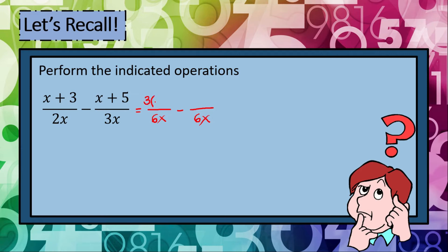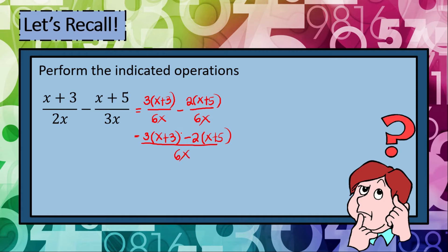So 3 multiplied to x plus 3. Then 6x divided by 3x is 2, so we have 2 multiplied by x plus 5. Since the denominator is the same, we can rewrite the numerator into 3 multiplied by x plus 3 minus 2 times x plus 5, all over 6x. Then we apply the distributive property.